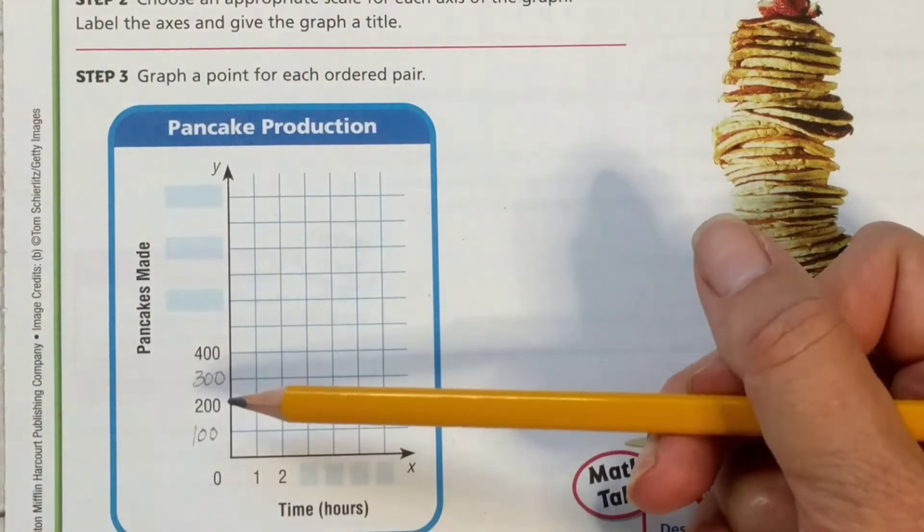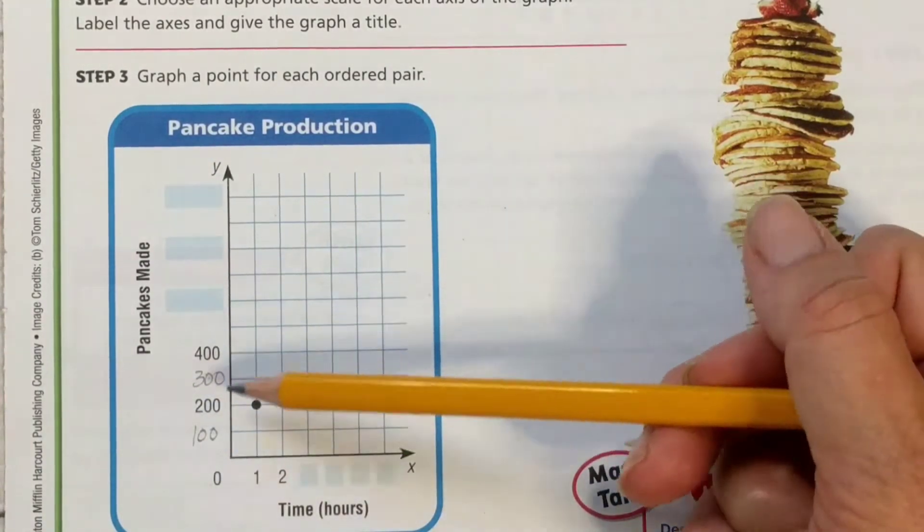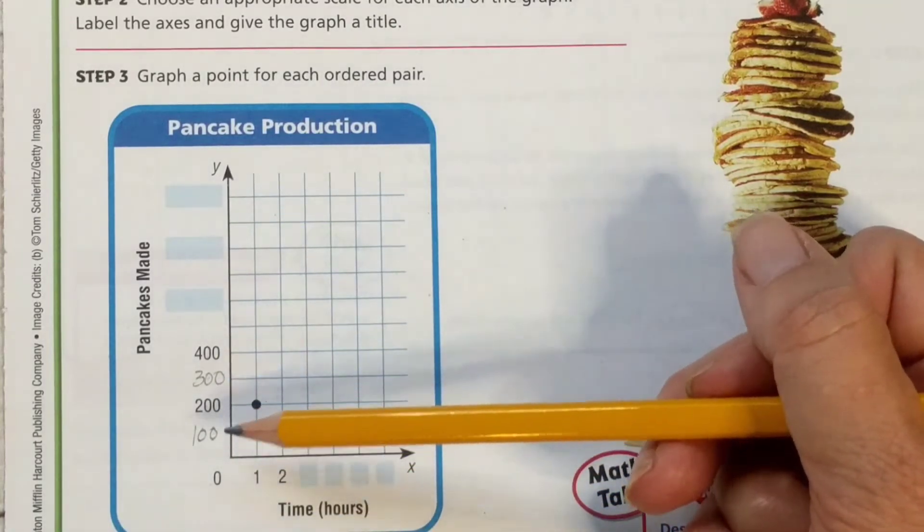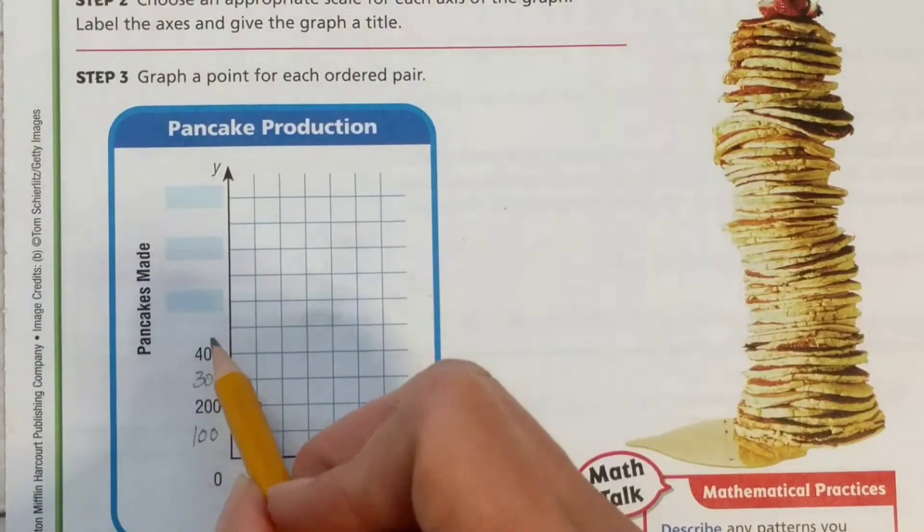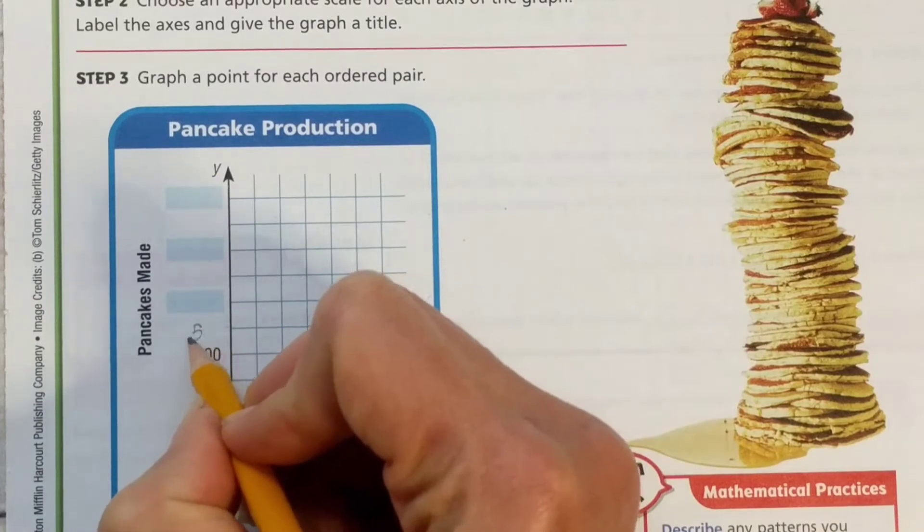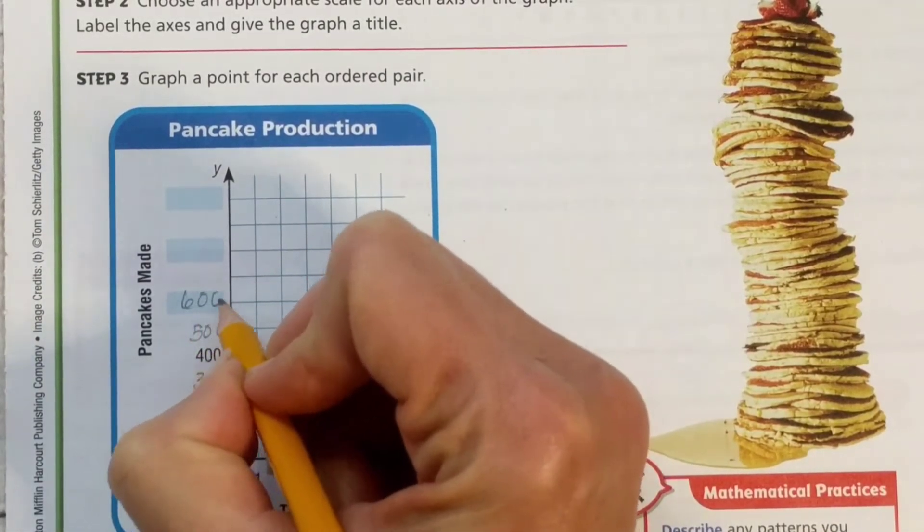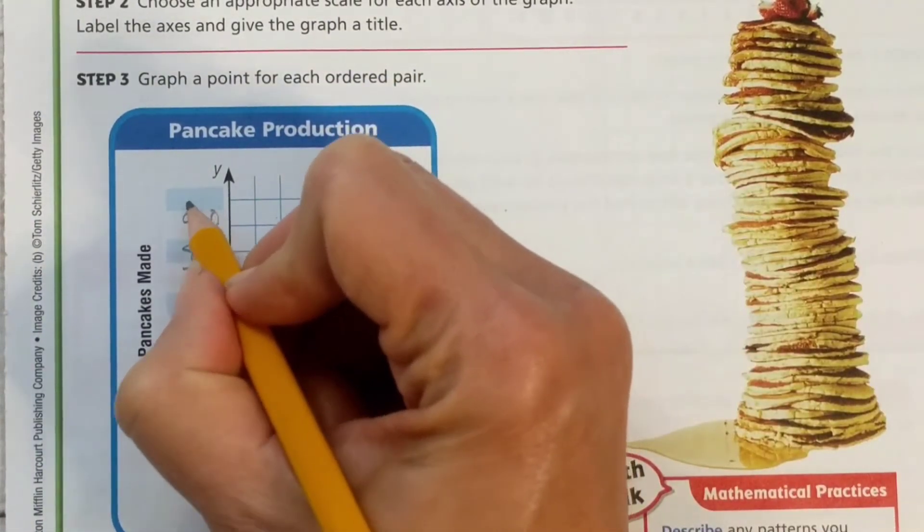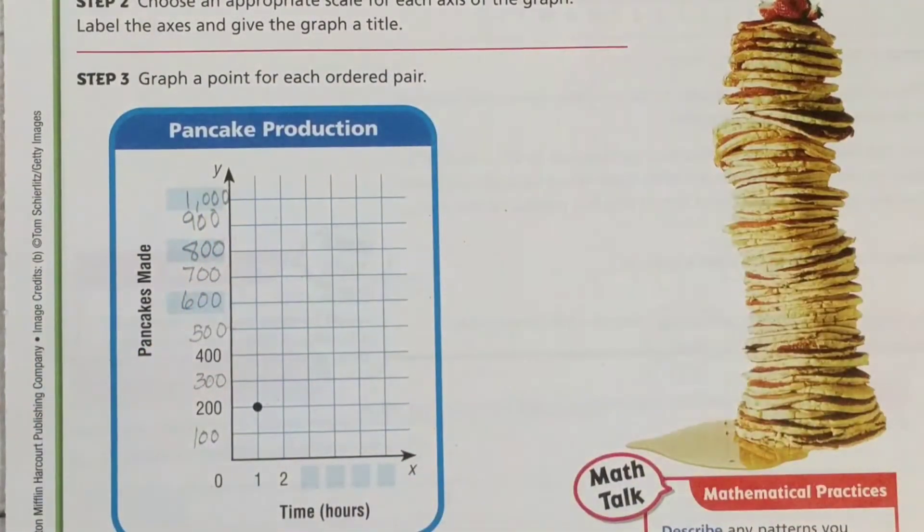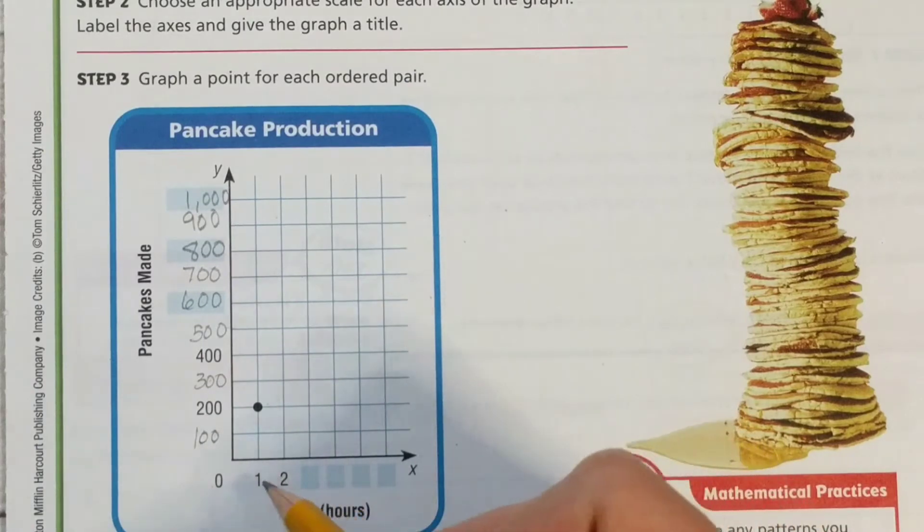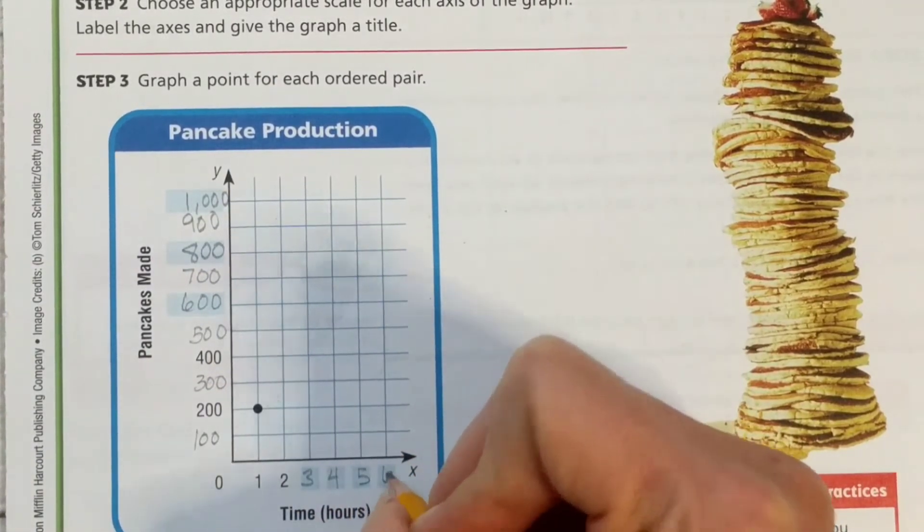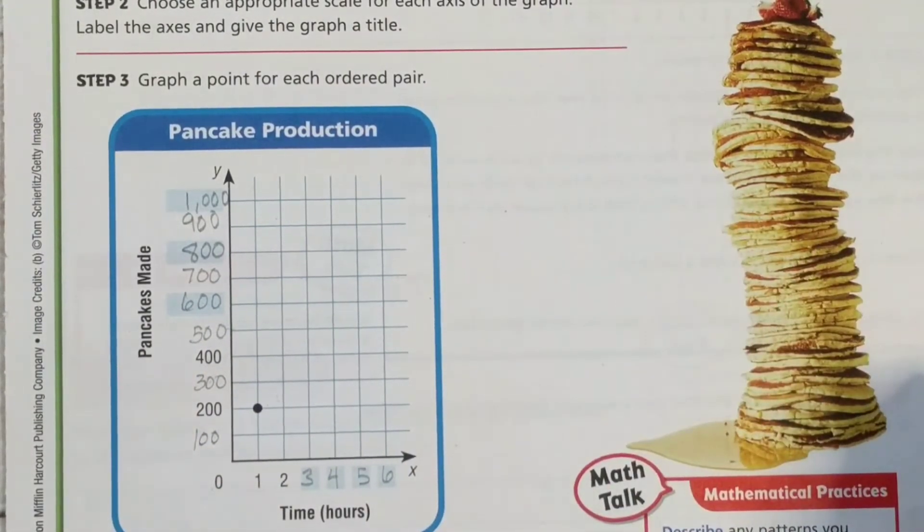Now, if we did count-bys that were only ones, this would be a gigantic graph. So they are making this a little easier by using larger scale or count-bys for the graph. So this would be 500 on this line. In fact, we'll just go ahead and write that in. And then 600, 700, 800, 900, and 1,000. Alright, down here our count-bys or our scale is by 1. So we have 1, 2, 3, 4, 5, and 6, even though our data doesn't go out to 6.